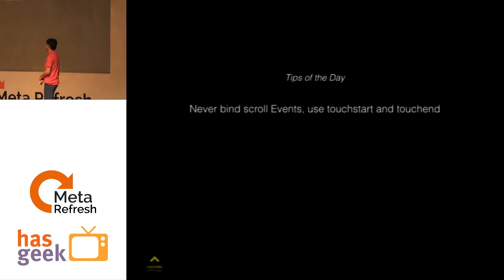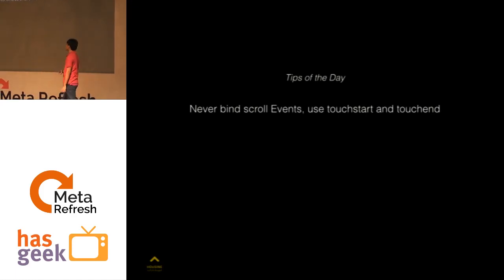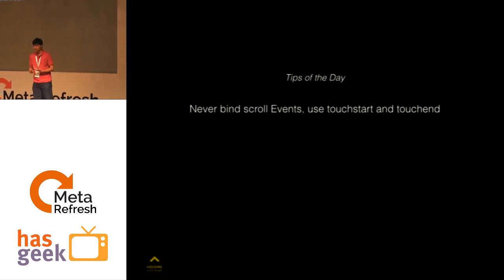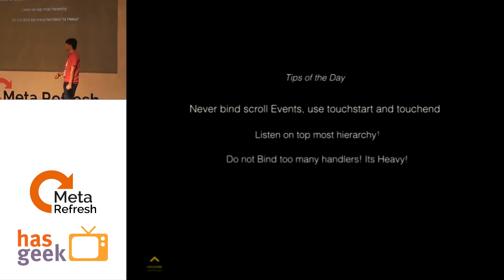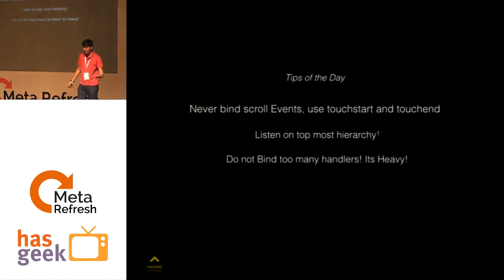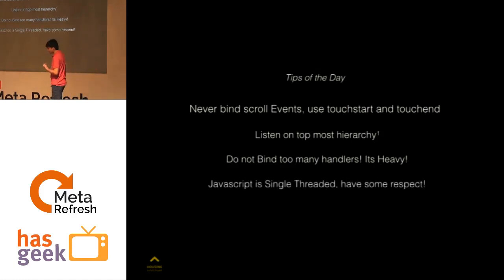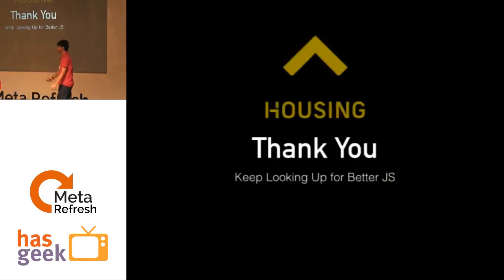Tips of the day: never use scroll events on mobile — please don't. You can always use touchstart and touchend; they're beautiful, they don't overpopulate the event queue, they just send you touch start and touch end — just two events. Listen on the topmost hierarchy — this is optional but might pay off. Do not bind too many handlers onto events — if you have thousands of listeners on the same DOM node, it's going to lag way too much. JavaScript is single-threaded — have some respect for JavaScript. Thank you guys.